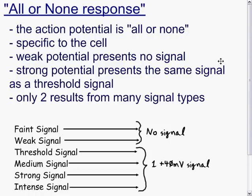The reason it's called all or none is because when the neuron receives a signal, it will either generate a plus 40 millivolt signal and continue that action potential down the neuron, or it won't present anything. A faint or weak signal will generate no response, whereas if you just meet the threshold required to generate a signal, it'll generate a plus 40 millivolt signal, and so will a medium, strong, or intense signal.